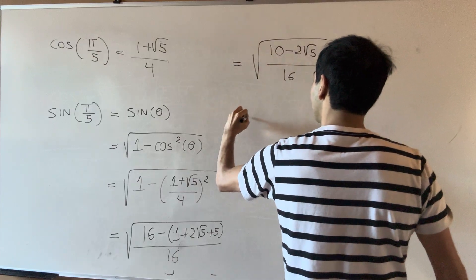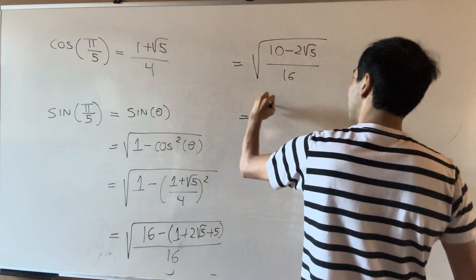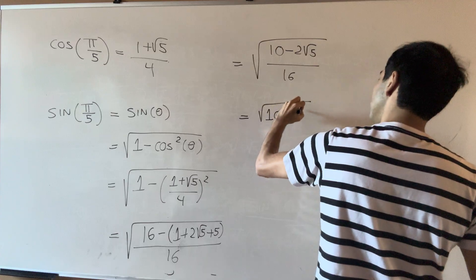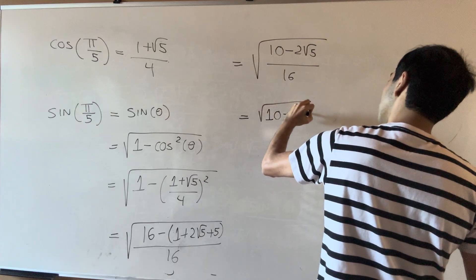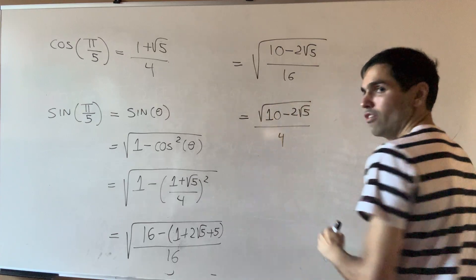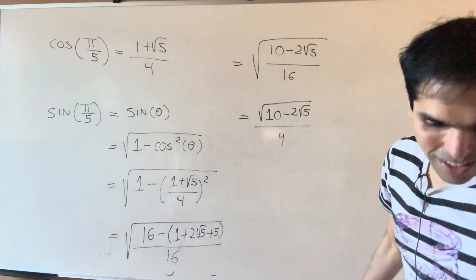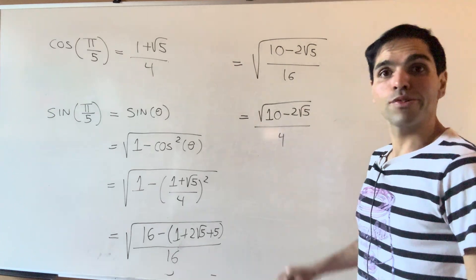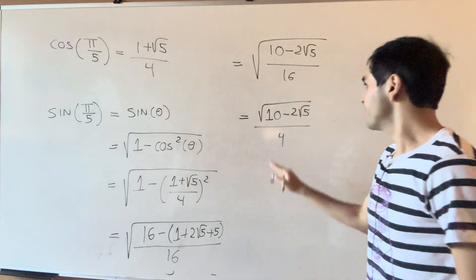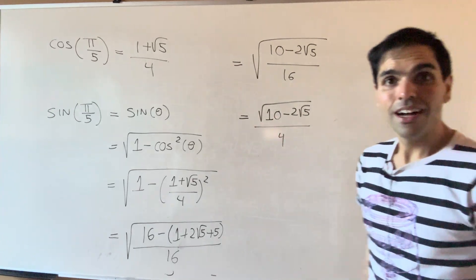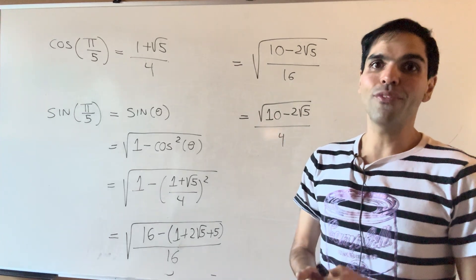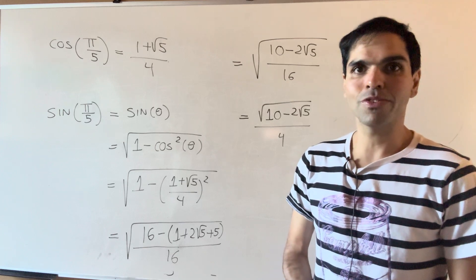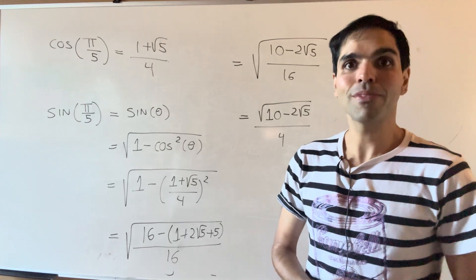So what is our final answer? It's the square root of ten minus two square root of five over four — a square root of a square root, quite interesting. I hope you liked this. If you want to see more math, please make sure to subscribe to my channel. Thank you very much.